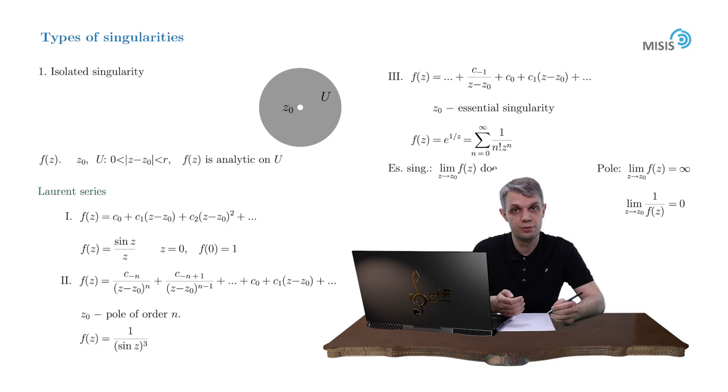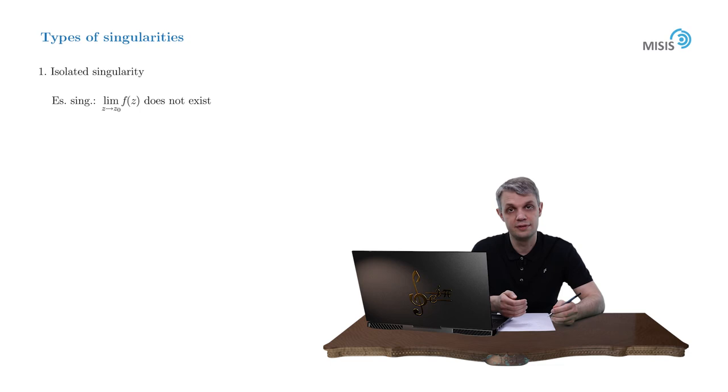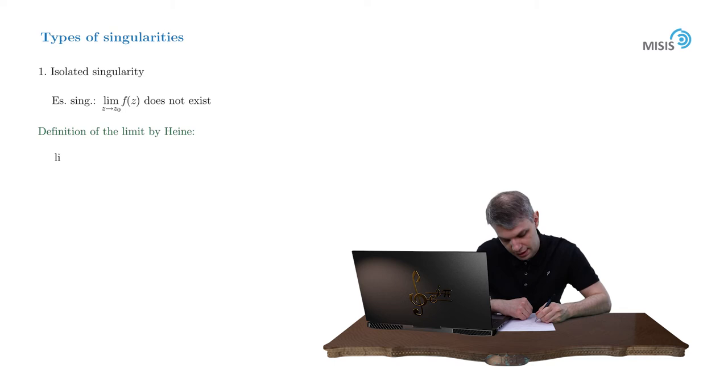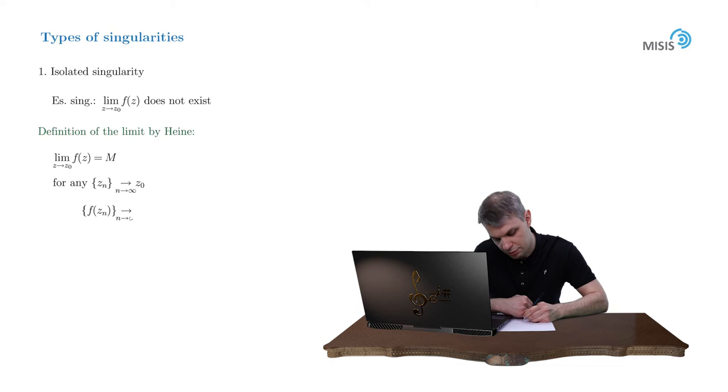The non-existence of the limit is usually proved in the framework of Heine's definition of the limit. The definition goes as follows: we say that function f(z) has limit M as z tends to z0 if for any sequence z_n converging to z0, the sequence of values f(z_n) always converges to the same point M.